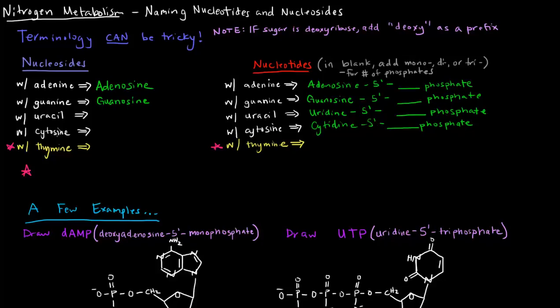In the case of uracil and cytosine, which are both pyrimidines, they become uridine, sounds like pyrimidine, and cytidine. This is a ribose with a uracil attached to it, and this is a ribose with a cytosine attached to it. They would become uridine and cytidine respectively.